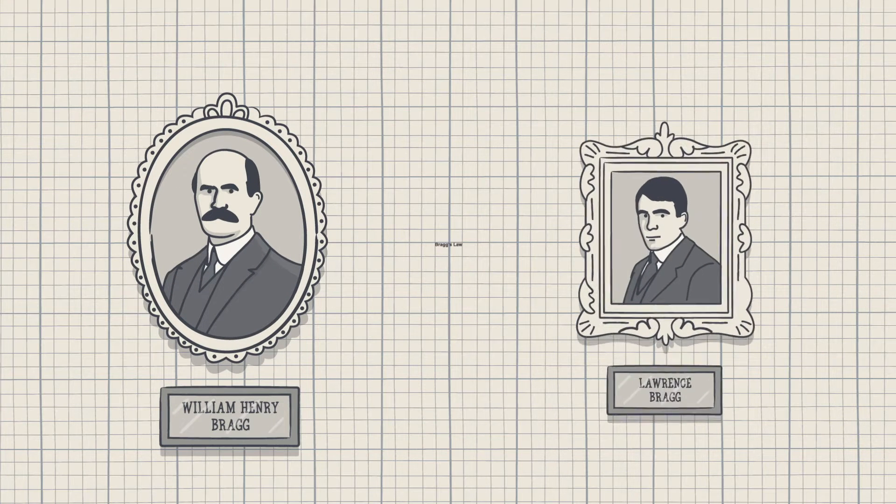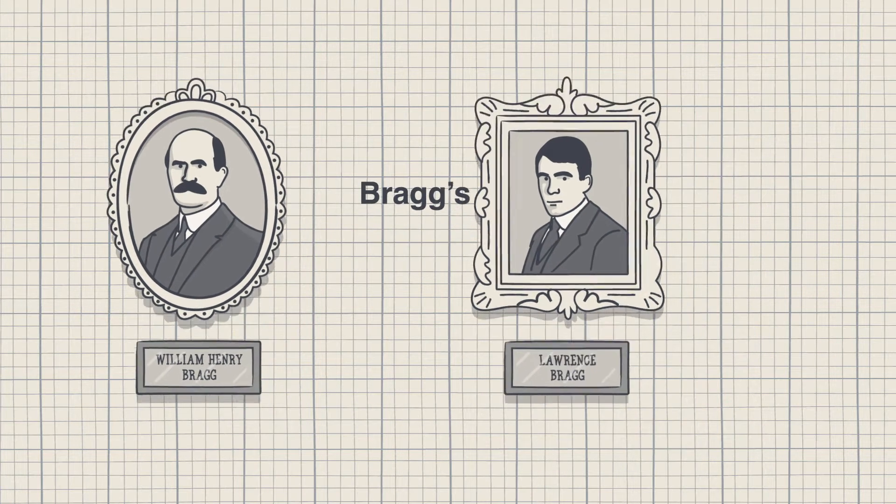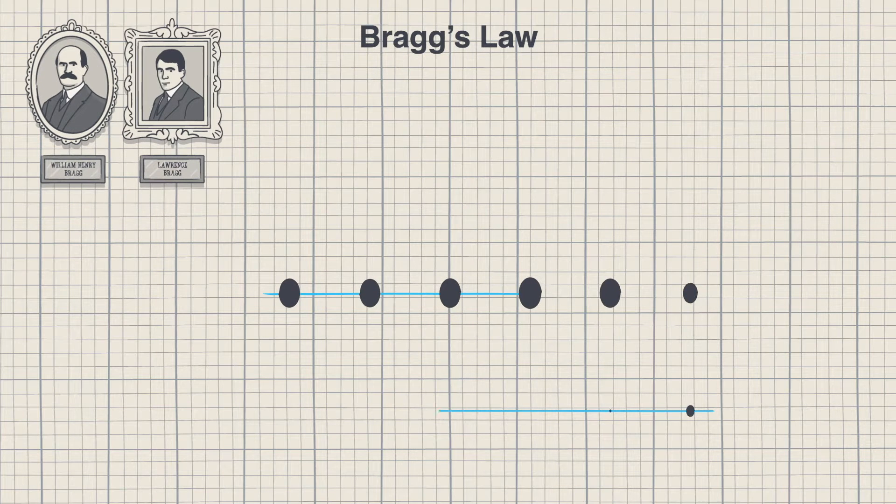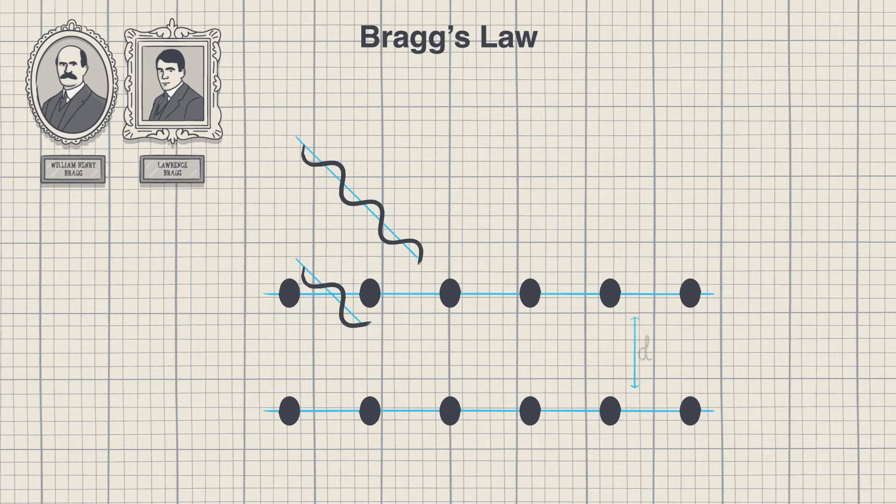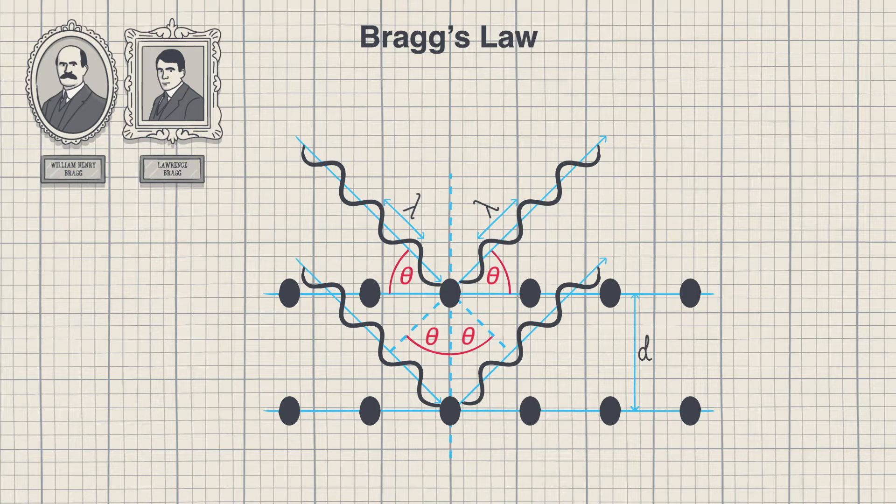Bragg's law is famous in crystallography as it is an elegant and simple understanding of how diffraction works. It uses the concept of planes separated by a distance d interacting with x-rays of a wavelength lambda. Diffraction occurs when the interplanar distance d is the same order as that of the wavelength of the x-rays.